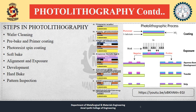In etching, a liquid or plasma chemical agent removes the uppermost layer of the substrate in areas not protected by photoresist. In semiconductor fabrication, dry etching techniques are generally used as they can be made anisotropic to avoid significant undercut of the photoresist pattern. This is essential when the width of features is similar to or less than the thickness of material being etched. Wet-etched processes are generally isotropic in nature. Development of low-defectivity anisotropic dry etch processes has enabled ever-smaller features defined photolithographically to be transferred to the substrate material.